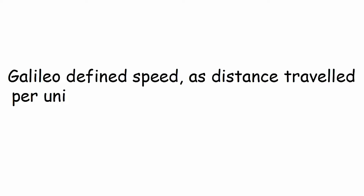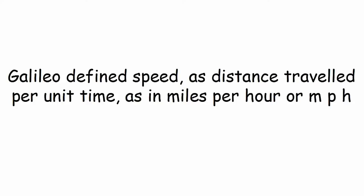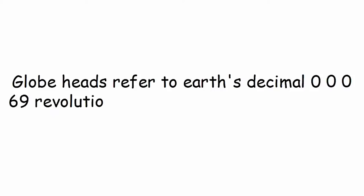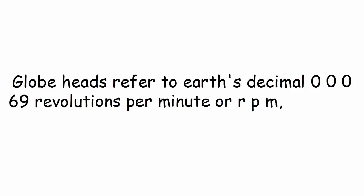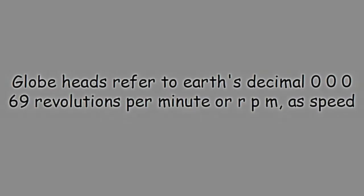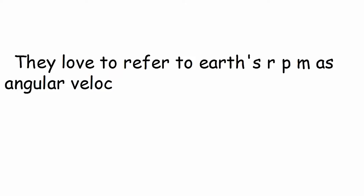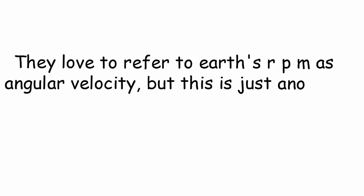Galileo defined speed as distance travelled per unit time, as in miles per hour or mph. Globe heads refer to earth's 0.0069 revolutions per minute or RPM as speed. They love to refer to earth's RPM as angular velocity, but this is just another term for RPM.